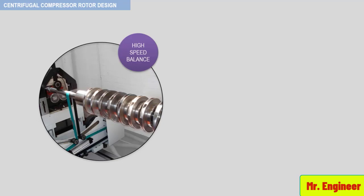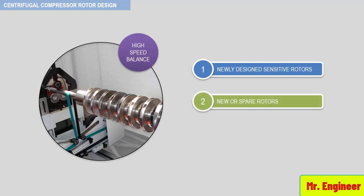Finally, to finish off this video, the applications that can benefit from high-speed balance are newly designed sensitive rotors, new or spare rotors, rotors that have been disassembled and will not run in their casings prior to field startup, and finally, test cells for spare rotors.